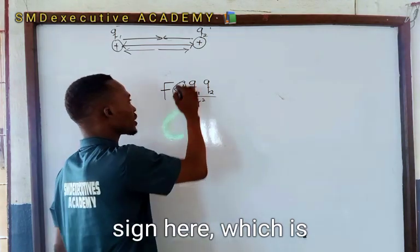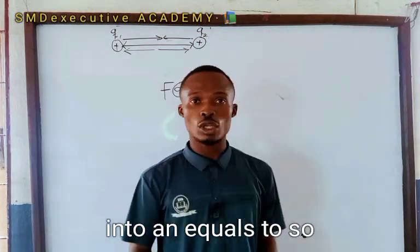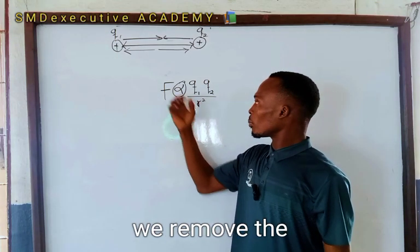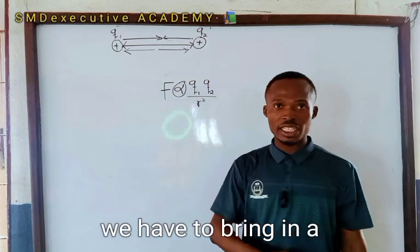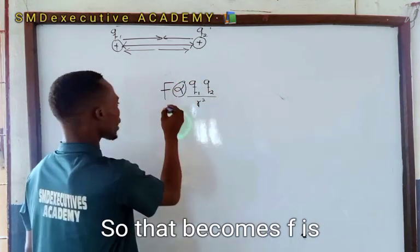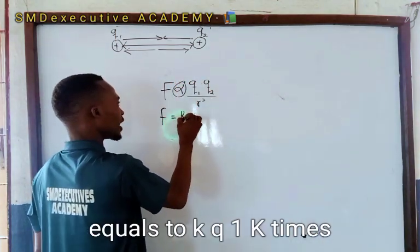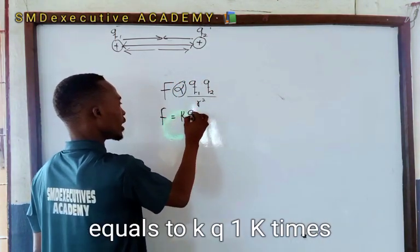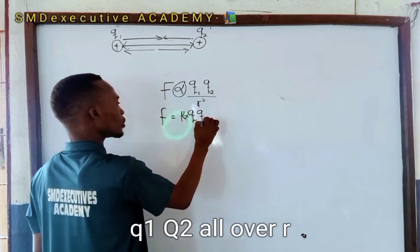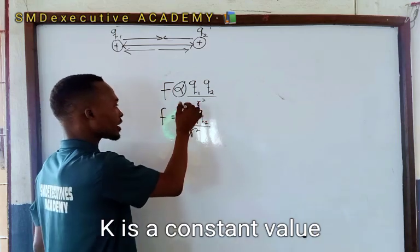We have a proportional sign which needs to be turned into an equals sign. To do that, we remove the proportional sign and bring in a constant of proportionality, so that becomes F equals K times Q1Q2 all over r squared.